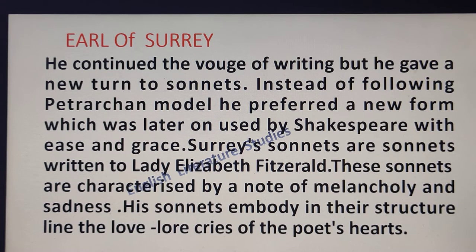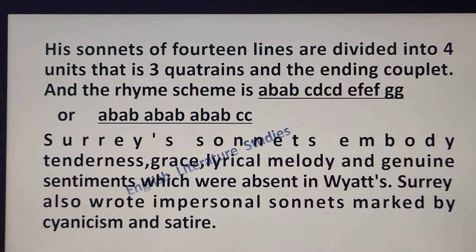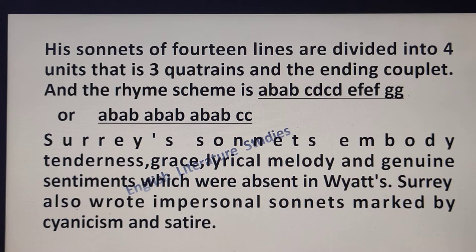Surrey's sonnets are written to Lady Elizabeth Fitzgerald. These sonnets are characterized by a note of melancholy and sadness. His sonnets embody in their structure the love-lore cries of the poet's heart. His sonnets of 14 lines are divided into 4 units — that is 3 quatrains and an ending couplet. The rhyme scheme is A-B-A-B, C-D-C-D, E-F-E-F for the 3 quatrains and G-G for the ending couplet. Alternatively: A-B-A-B, A-B-A-B, A-B-A-B for the 3 quatrains and C-C for the ending couplet.